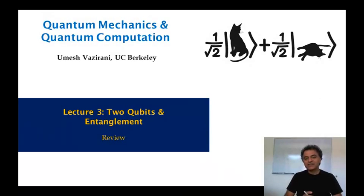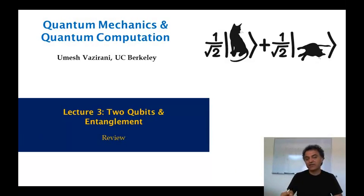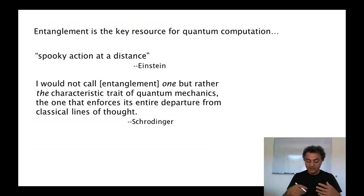Good morning. In today's lecture we'll talk about how to describe the quantum state of a system of two qubits. And in the process we'll talk about a very fundamental concept, that of entanglement, quantum entanglement. Quantum entanglement is probably the most important concept in quantum information, quantum computation.